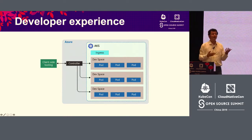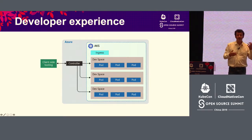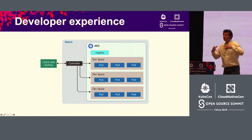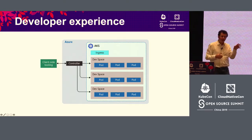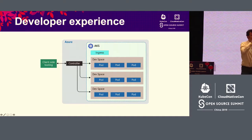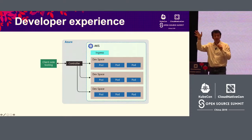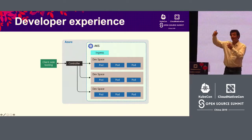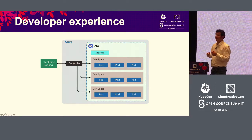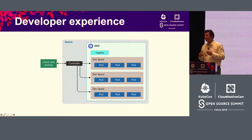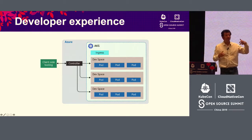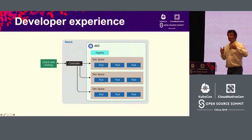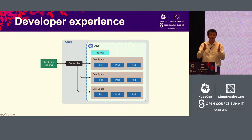Once the connection between the VS Code extension and the cluster controller is established, the extension is able to prime your project — it recognizes, for instance, that it's a Node.js project, creates a Dockerfile and a Helm chart for it, connects to the server-side controller, passes all the code to it, does a Docker build on the server side, and then deploys it with a Helm chart and opens a connection for debugging.